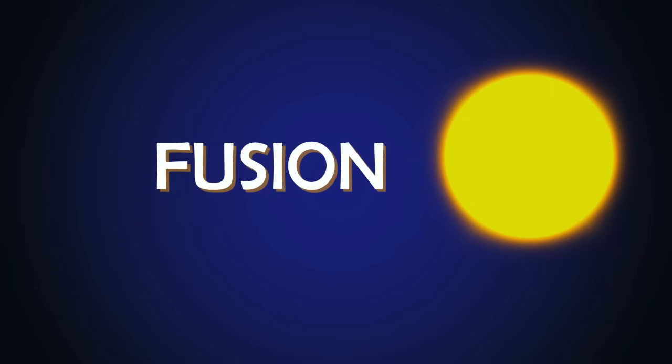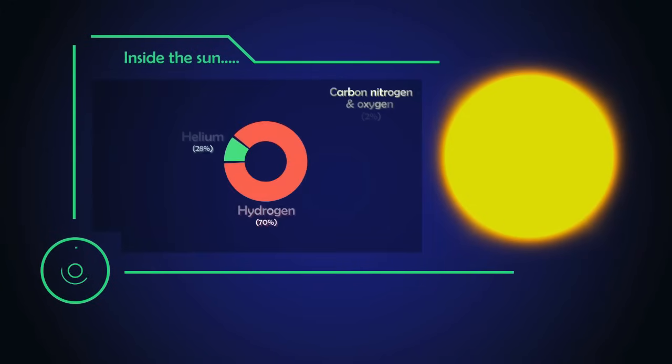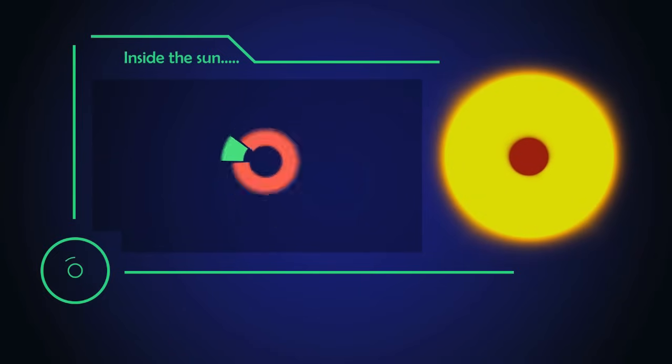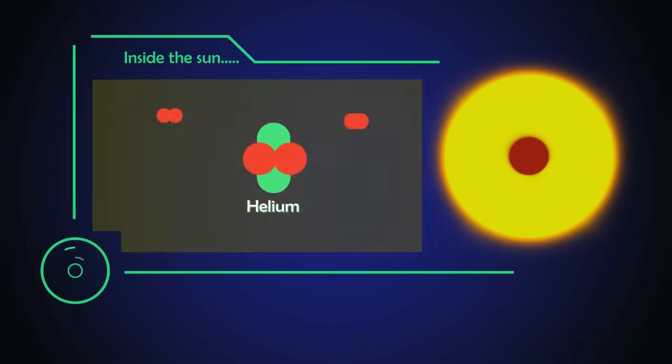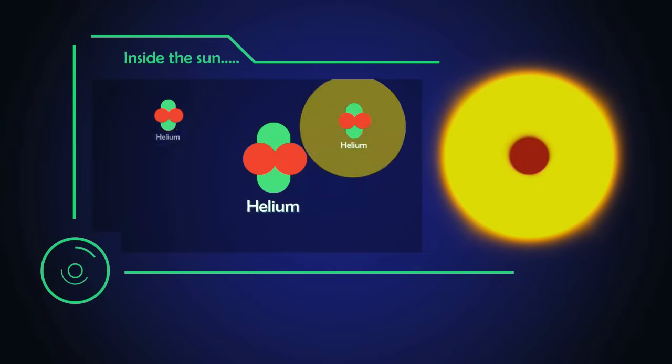The sun does it naturally using a process called fusion. The sun, which is a huge sphere of mostly hydrogen gas, has intense pressure and heat at its core. This heat and pressure causes the hydrogen atom to fuse together to create helium and release energy. But creating such an environment on earth is not easy.